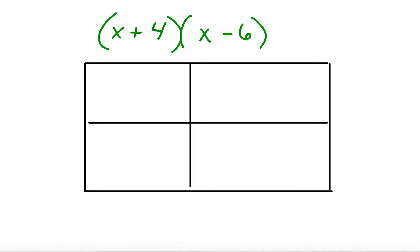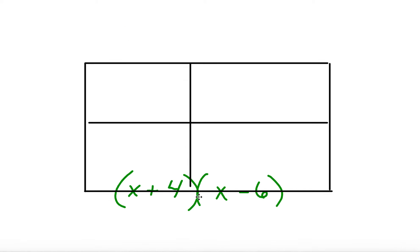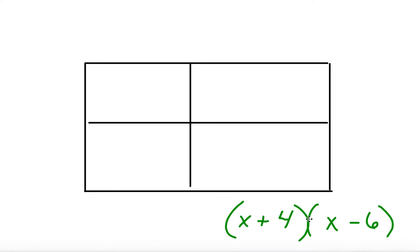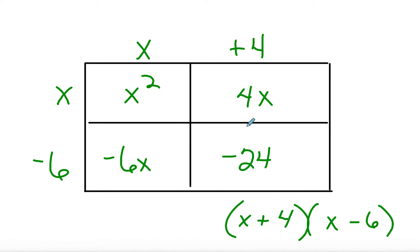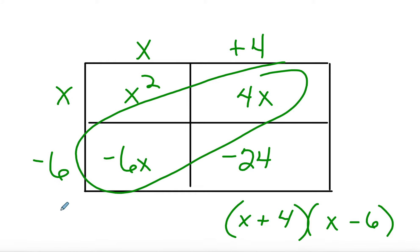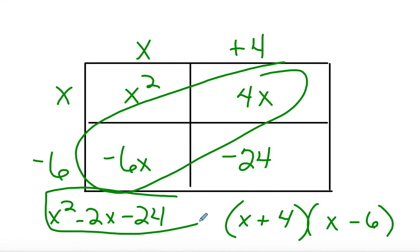On the top we put one binomial and on the side we put the other — it doesn't matter which one you put where. So we have (x + 4) across the top and (x − 6) on the side. x times x is x², x times 4 is 4x, −6 times x is −6x, and −6 times 4 is −24. Our like terms are on the diagonal, so our answer is x² − 2x − 24.